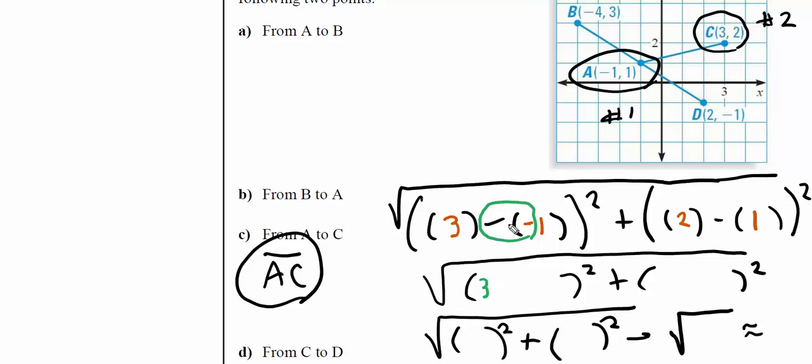This is what we should have gotten. Simplify: three comes down, minus a negative one is plus one. Here we have two minus one. Three plus one is four, two minus one is one. Four squared is 16, not eight - four squared is 16 plus one squared which is one. That's 17. In the calculator we get about 4.1 rounded to the nearest tenth.